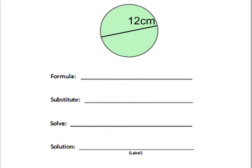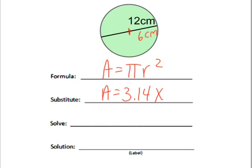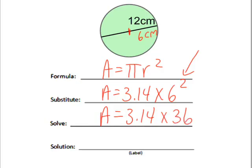Let's try another one. Start with our formula: area equals pi r squared. Let's substitute in 3.14 for pi. Now the radius — it's not 12, that's our diameter. The radius would be half of 12, so it would be 6 centimeters. We're going to square that, so we do the exponent first: 3.14 times 36, and that would be 113.04 square centimeters.